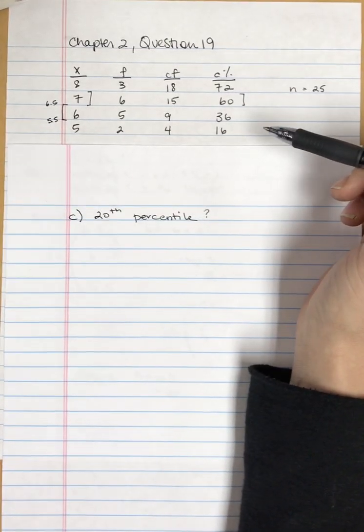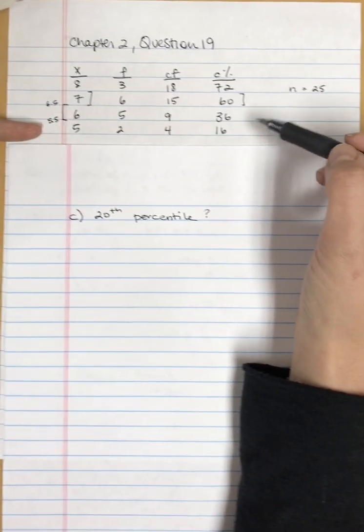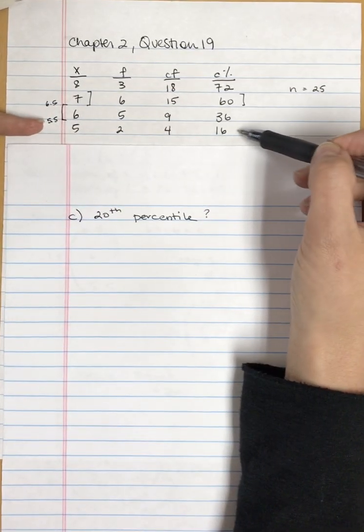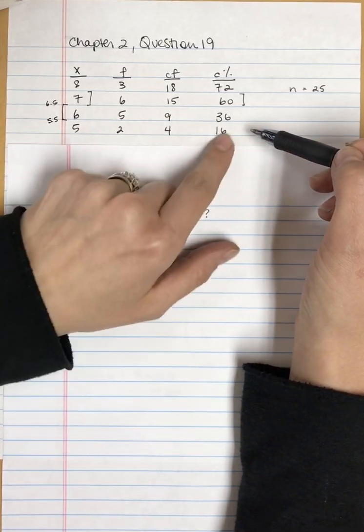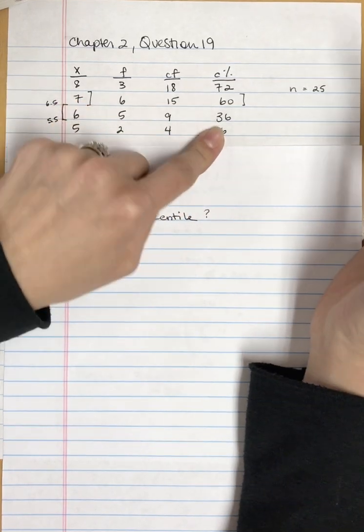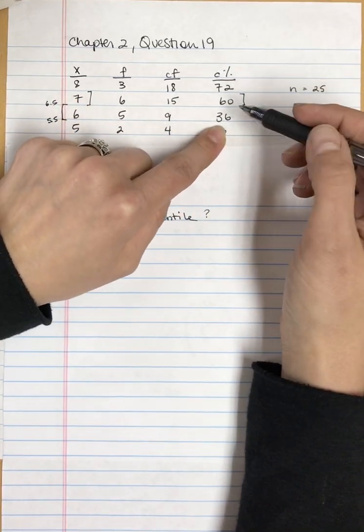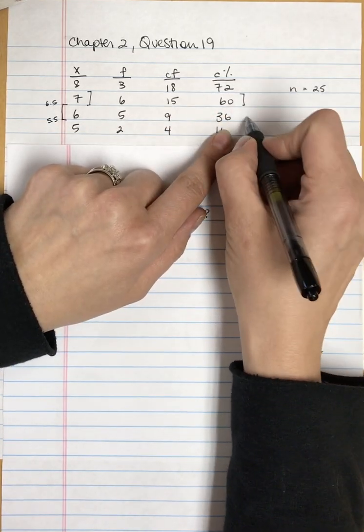First, we have to find what interval it's likely to fall in. It's not going to be in the lowest category because a score of 5.5 is associated with the 16th percentile, and 16 is less than 20.